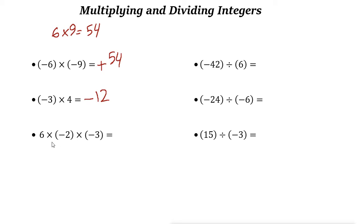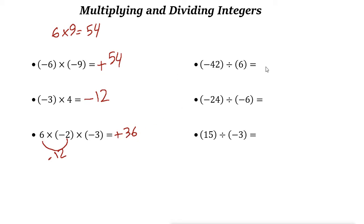Now with three integers, you can multiply any two first. Starting from the left: six times negative two is negative twelve. Then negative twelve times negative three — negative times negative is positive — so the answer is positive 36. Alternatively, negative two times negative three is positive six, then six times six is 36. Either way, the answer is 36.